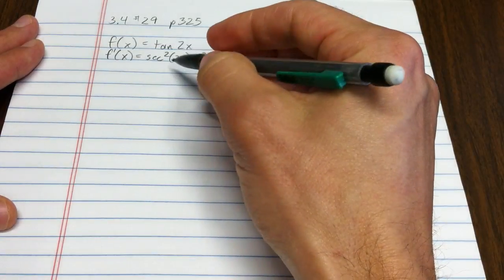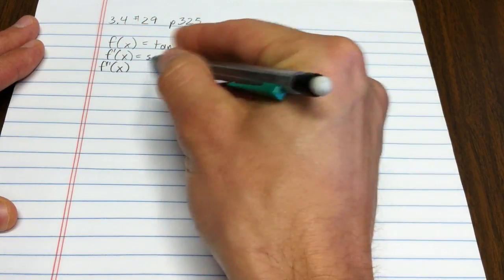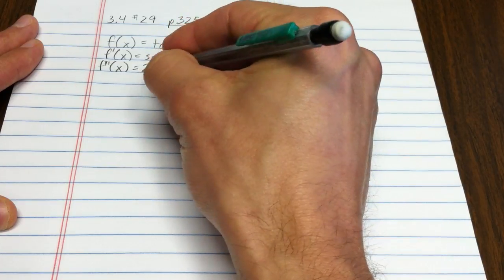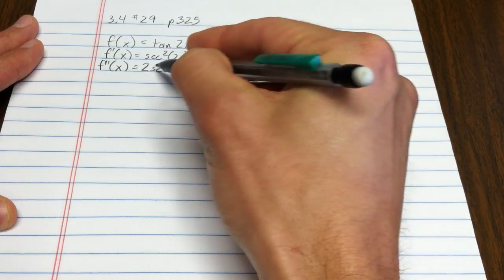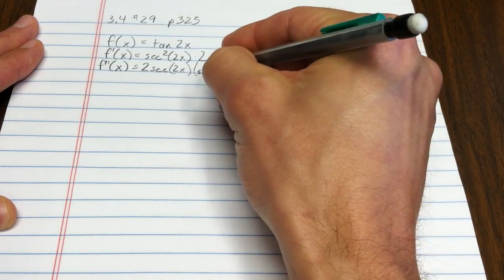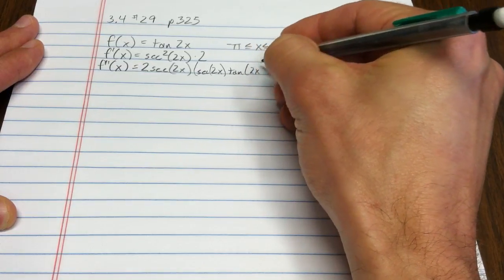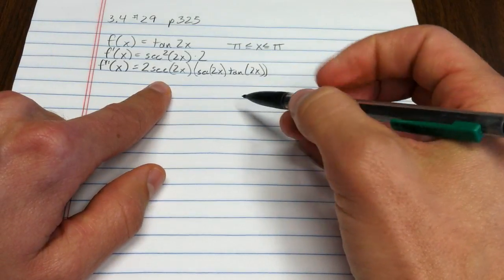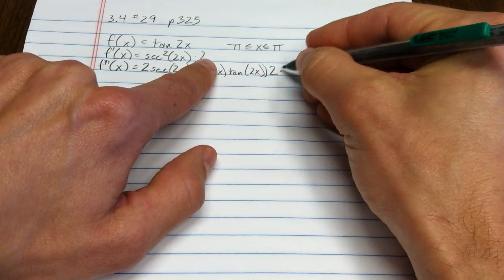Now I have to take the second derivative, the derivative of the derivative. I'm going to use the chain rule here. That's 2 secant 2x to the 1 times the derivative of secant 2x, which is secant 2x tangent 2x. Now, that's times the derivative of the inside piece, 2, and then I have a constant multiple 2.